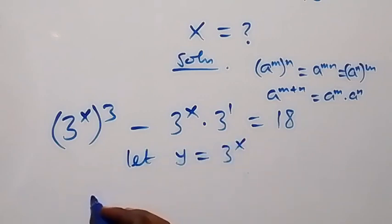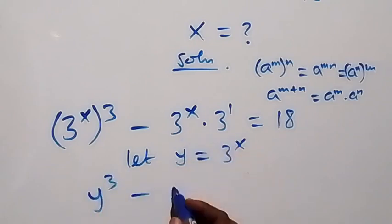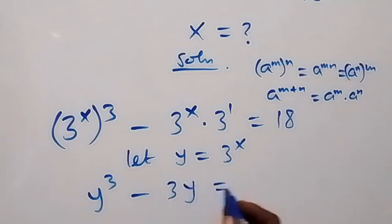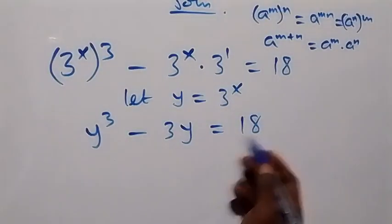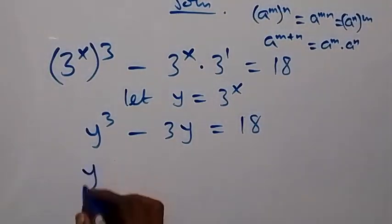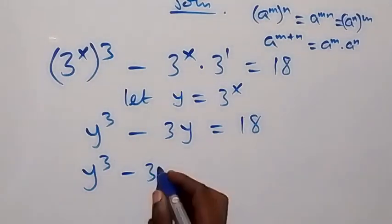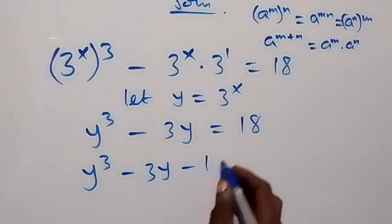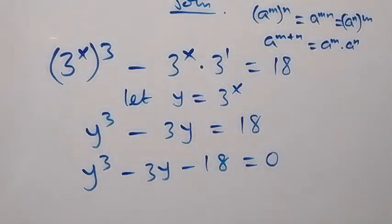That is here, this becomes y raised to power 3 minus y times 3, plus 3y, equals 18 on this side. Then from here, let's bring it together: we have y raised to power 3 minus 3y minus 18 equals 0.